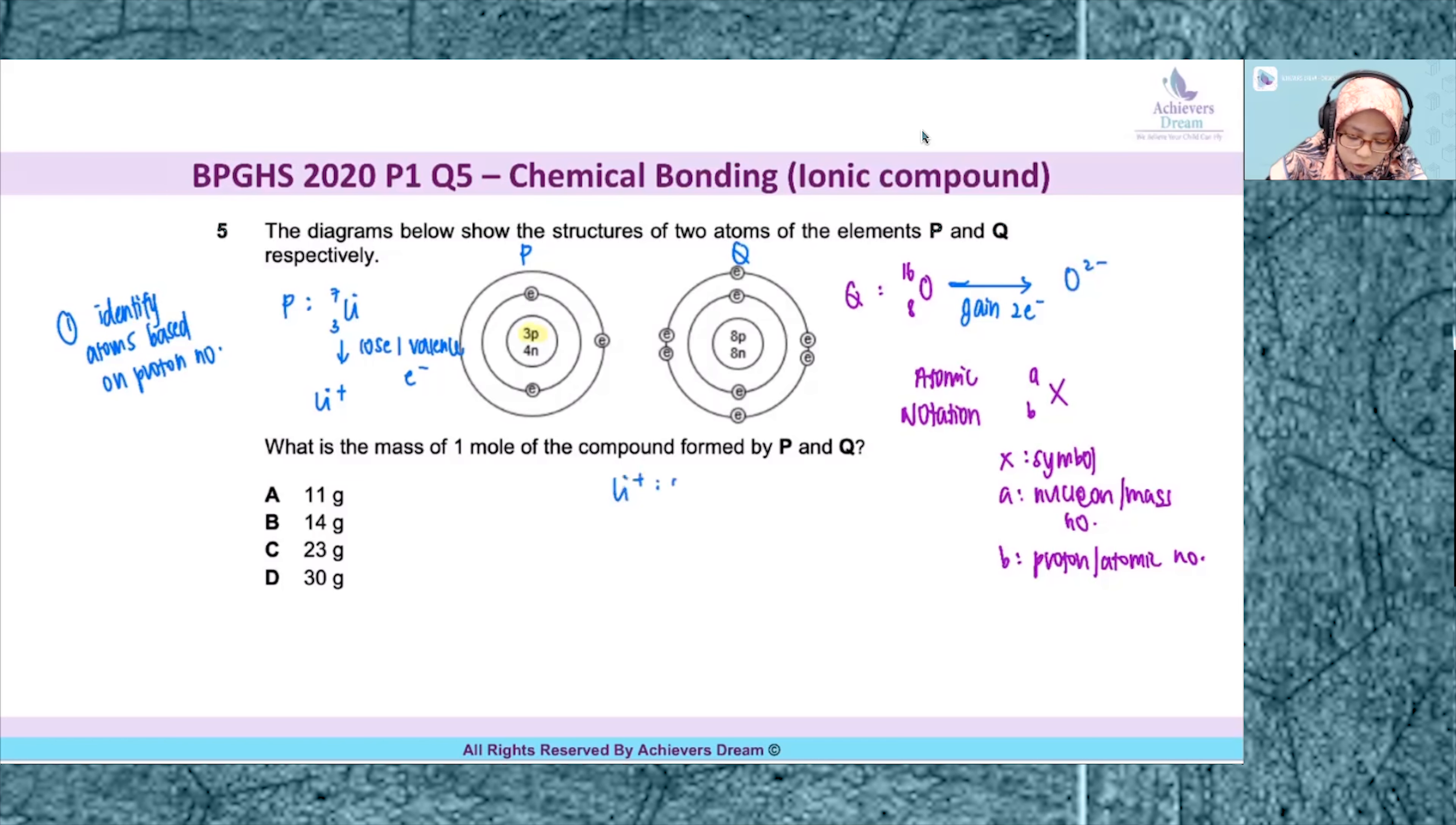So the second step is to write the correct formula of compound. And for Li plus and O2 minus, the formula is based on a cross method Li2O. After you get the formula of the compound, then you can determine what is the mass of one mole of the compound.